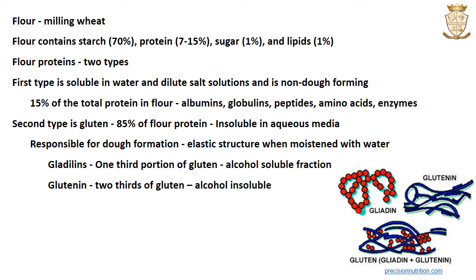Flour proteins are of two types. The first type is soluble in water and dilute salt solutions, and this is known as the foaming protein. It forms about 15% of the total protein in flour and includes albumins, globulins, peptides, amino acids and enzymes.